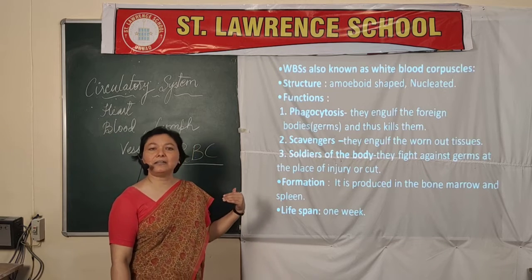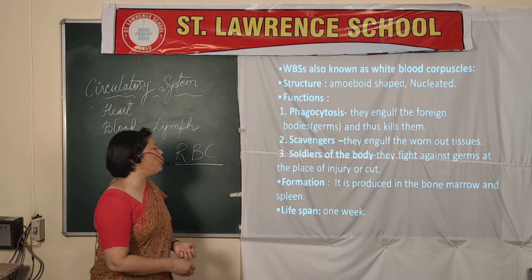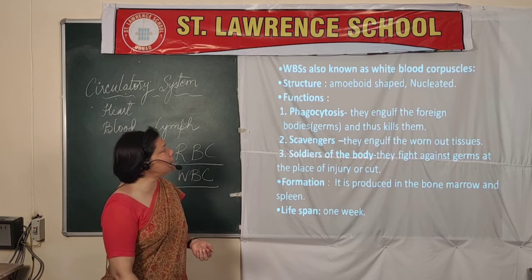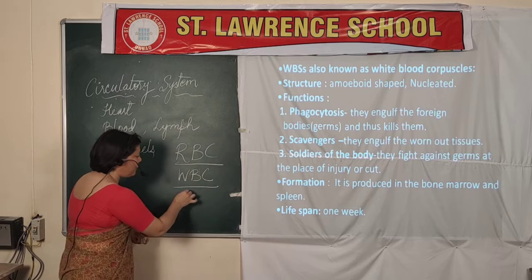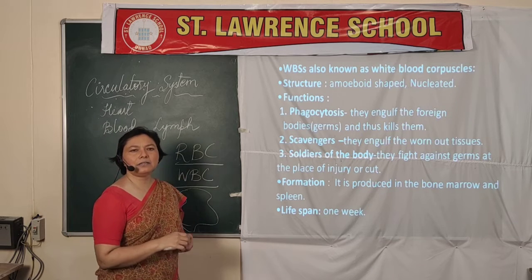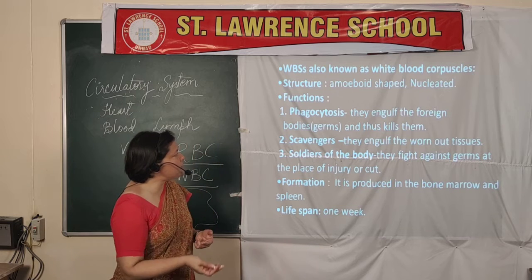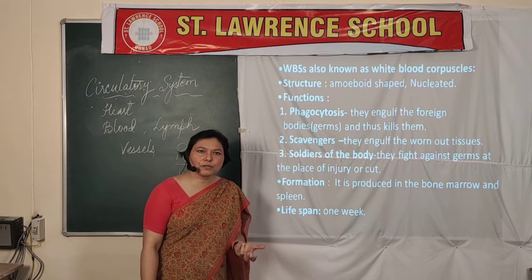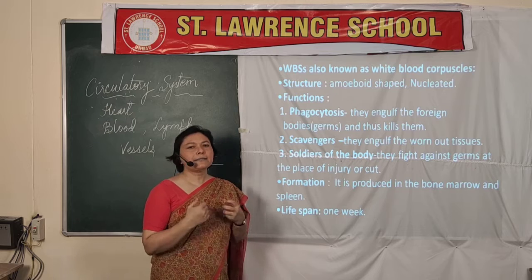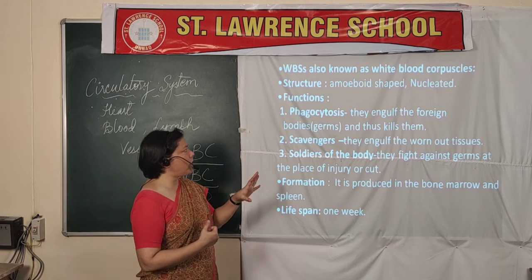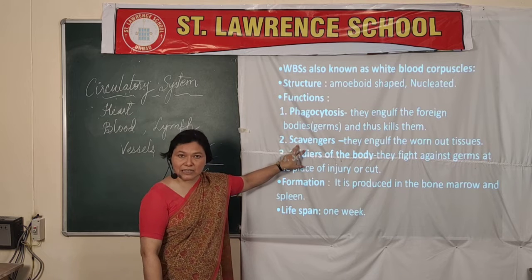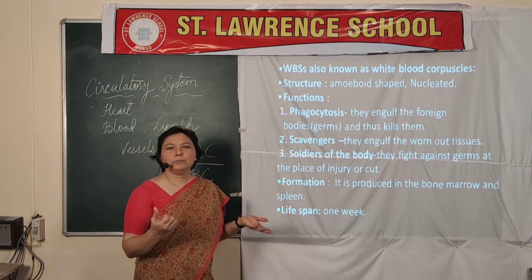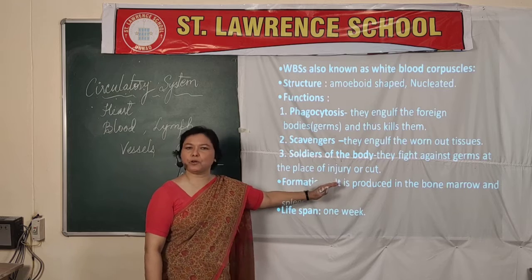The next category is WBCs — white blood corpuscles, also known as leukocytes. They are amoeboid in shape, meaning they can assume any shape. They have a nucleus. The main functions of WBCs are of three kinds: phagocytosis, acting as scavengers, and acting as soldiers of the body, protecting it from various germs.